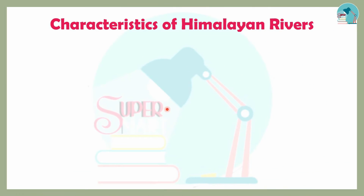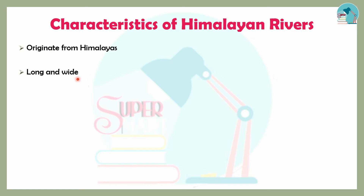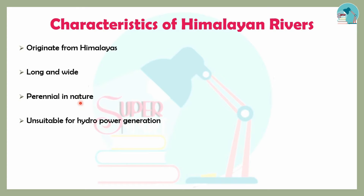The characteristics of the Himalayan Rivers — Indus, Ganga, and Brahmaputra — are that they originate from the Himalayas. They are long and wide, and support hydropower generation. Their middle and lower courses are navigable.